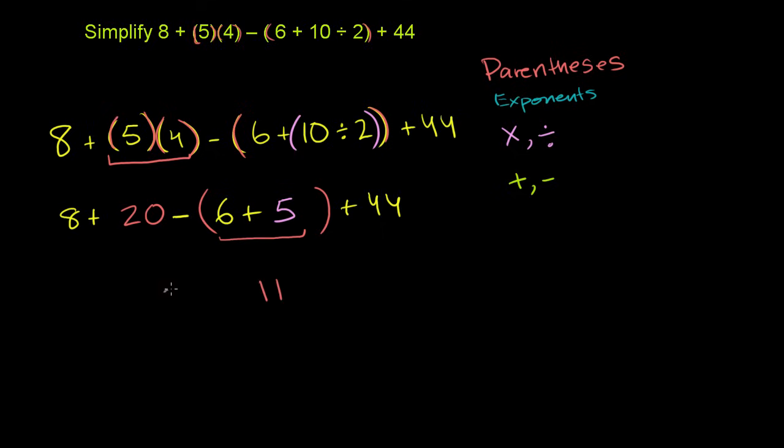So we're left with 8 plus 20 minus 6 plus 5, which is 11, plus 44. And now that we have everything at this level of operations, we can just go left to right. So 8 plus 20 is 28.